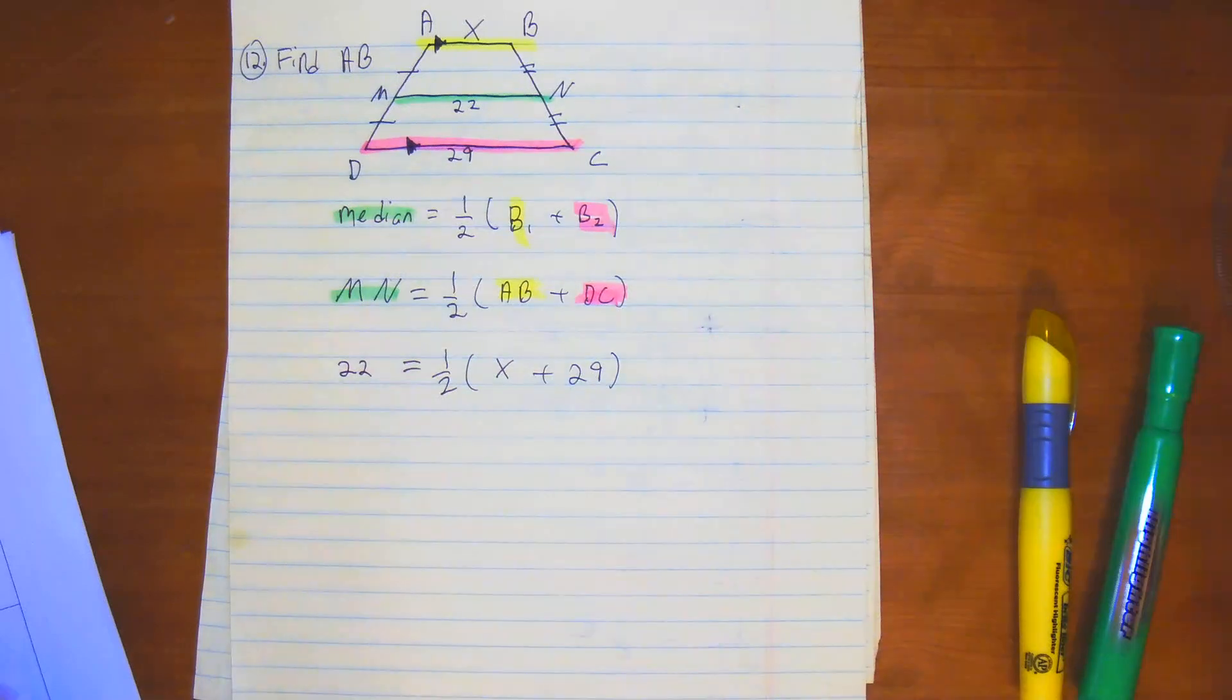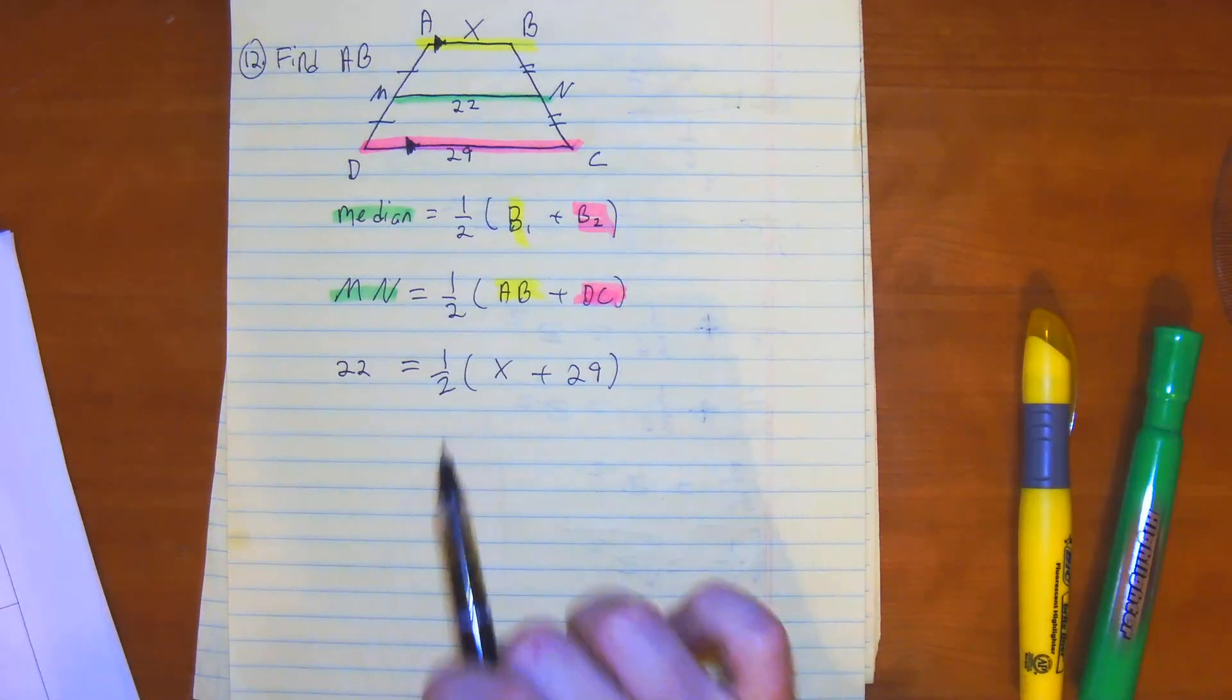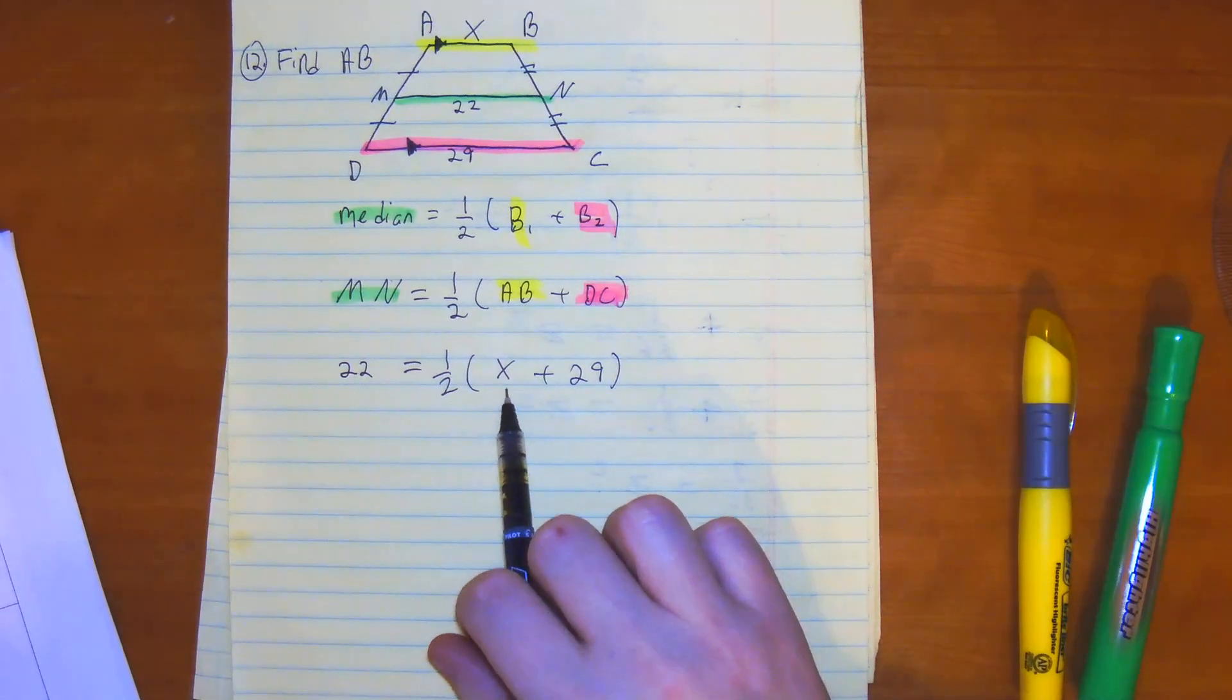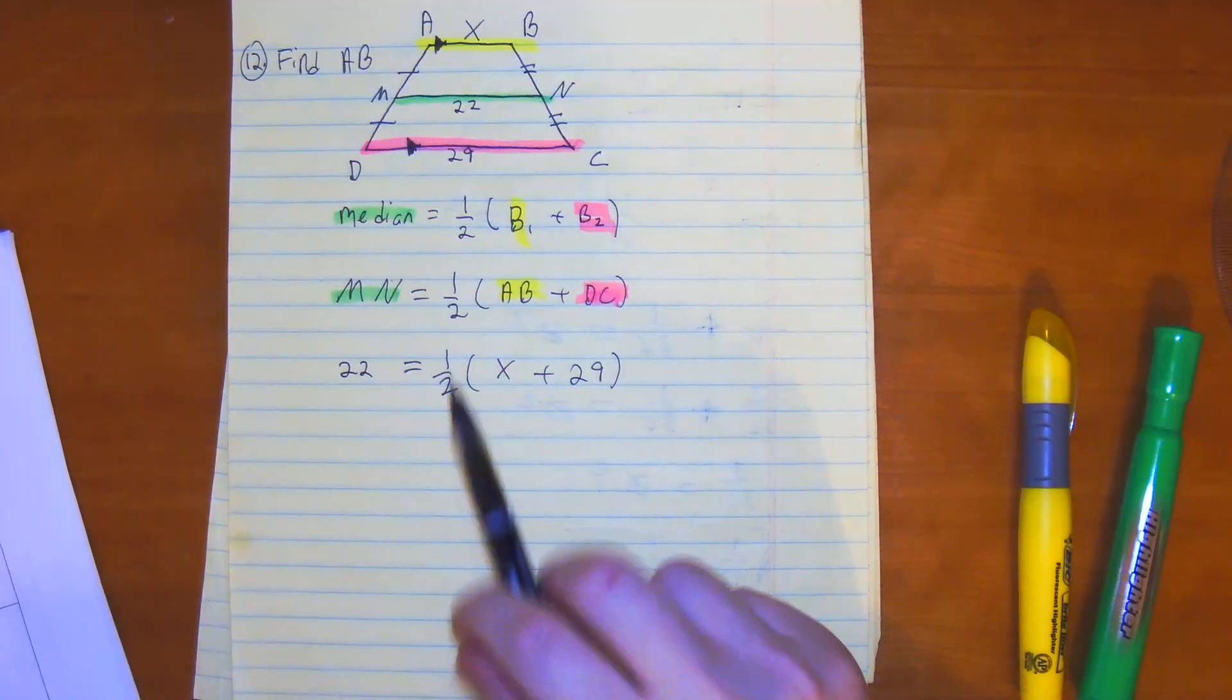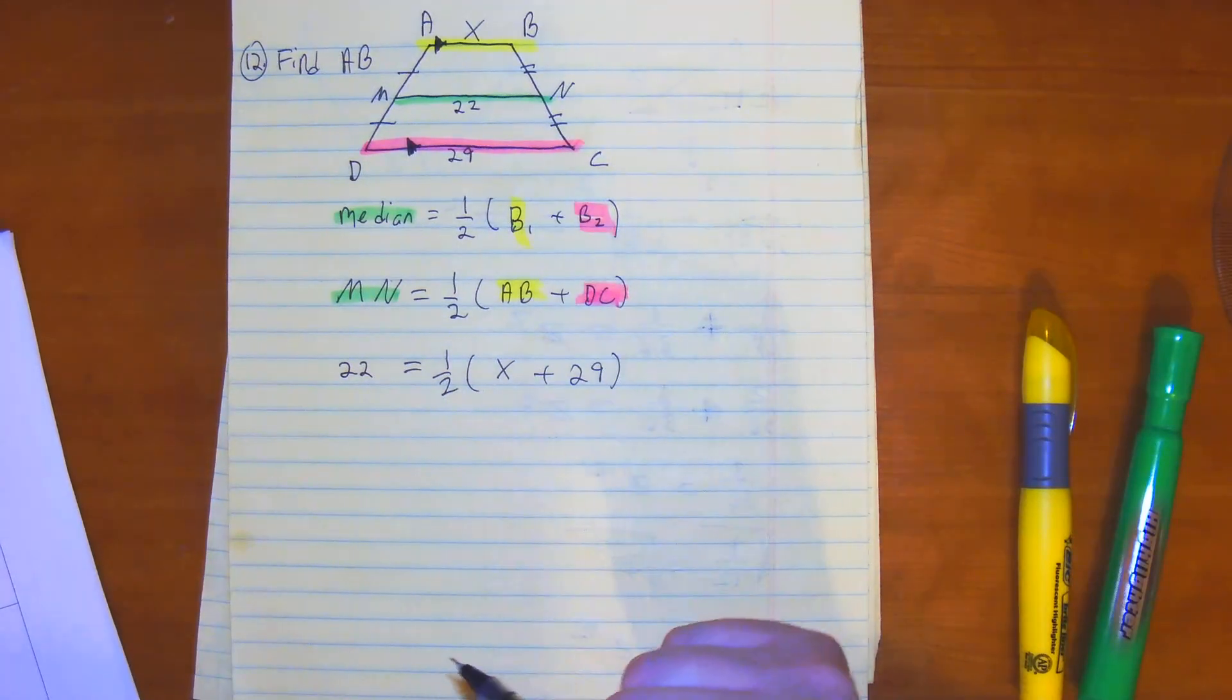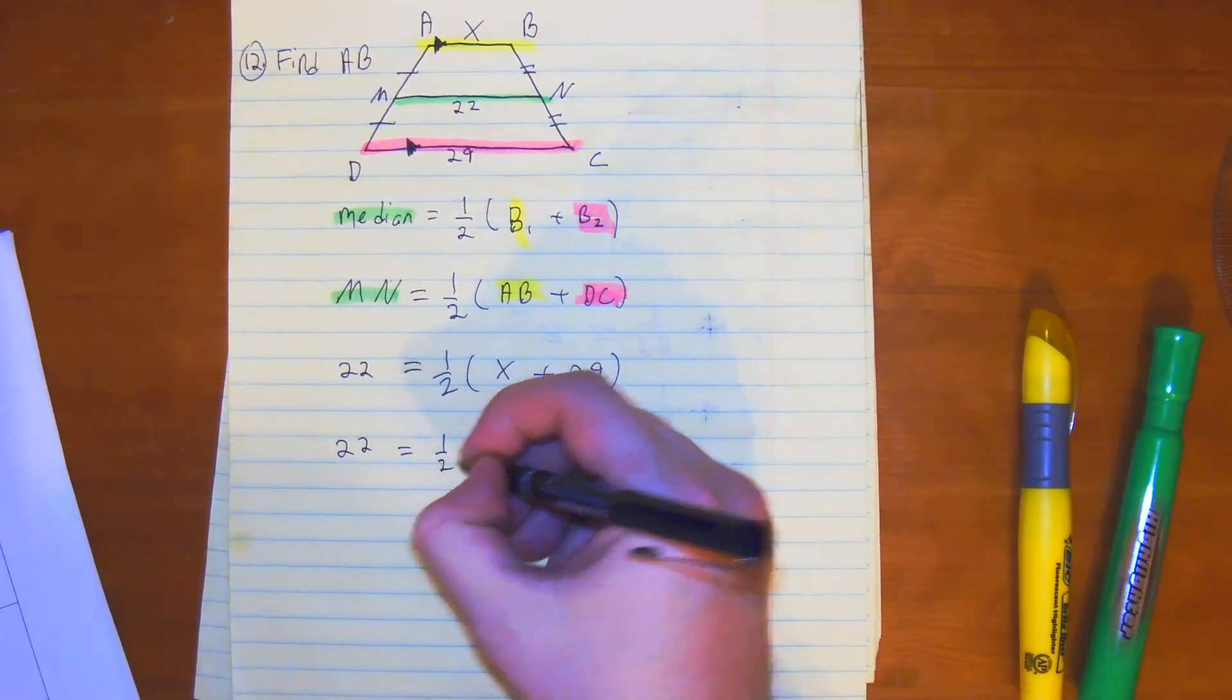So from here, we could distribute the half and make our lives harder, but why do that? This is just basically saying half of X, half of 29. Can't we just do the opposite of division? What the first thing we're going to do is multiply both sides by 2.